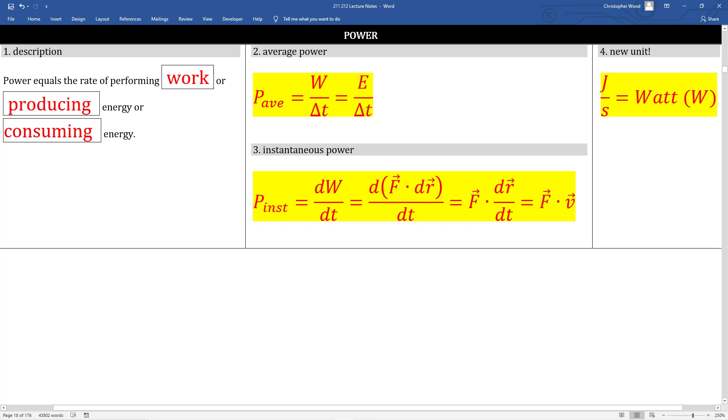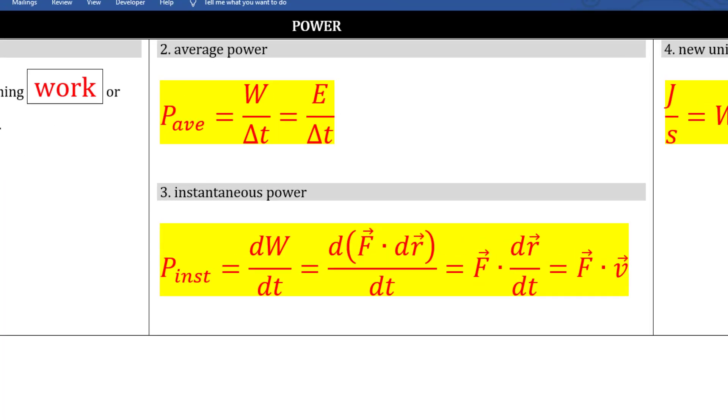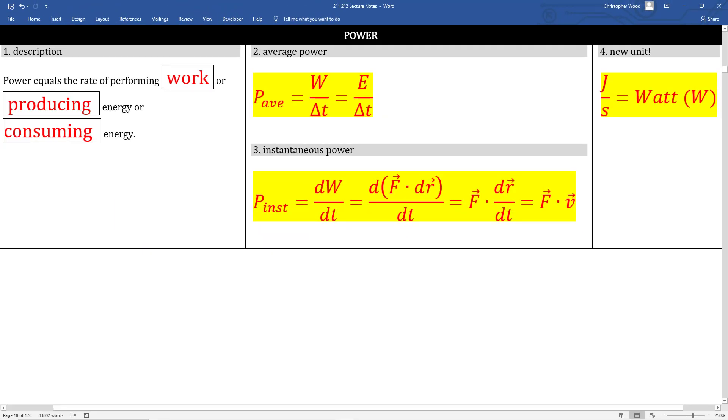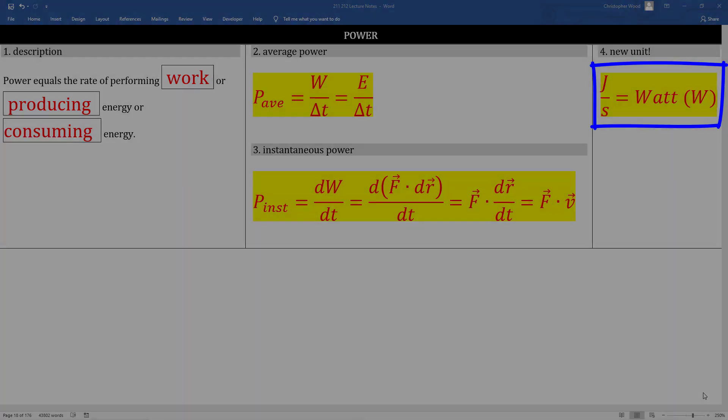So let's start with box 2. Average power is the rate of doing work or the rate of producing energy or consuming energy. Box 3, look what we're doing with calculus. We write dW dt instead of W over delta t. We remember the definition of work and we have another expression for power. So boxes 2 and 3 are basically your power tool kit that you apply depending on your specific situation. Box number 4, we do the dimensional analysis and we introduce a brand new unit, the watt. One watt is equal to one joule per second.